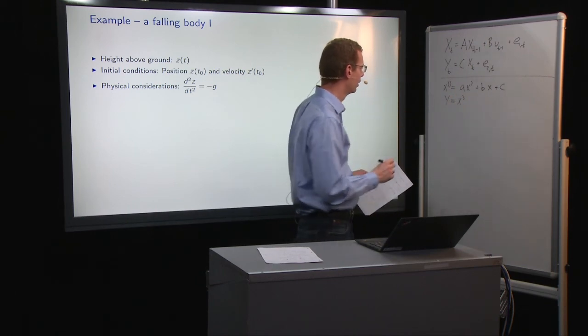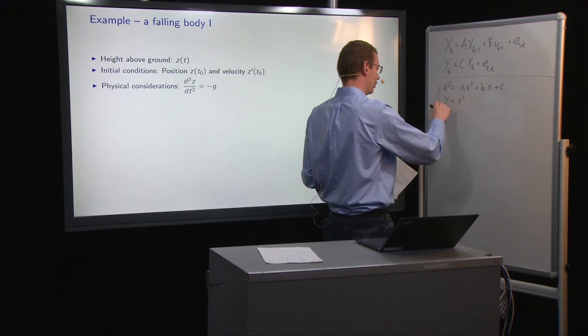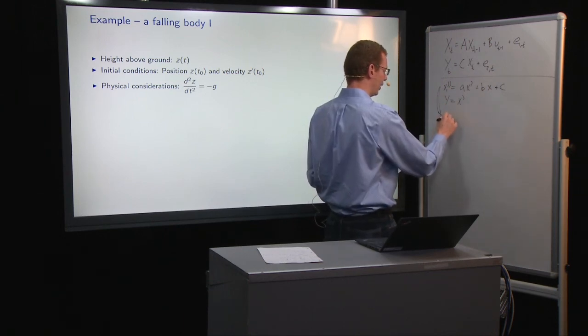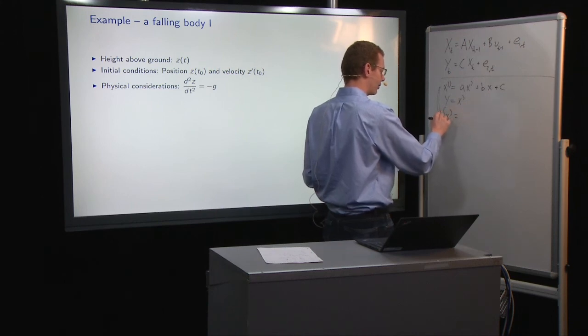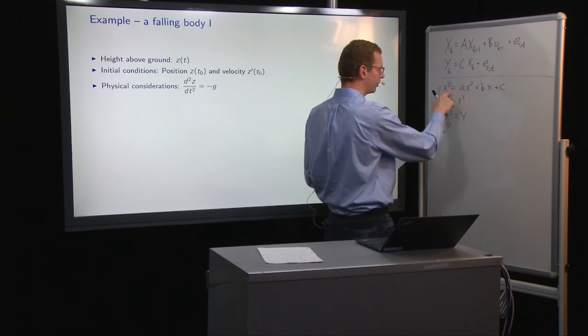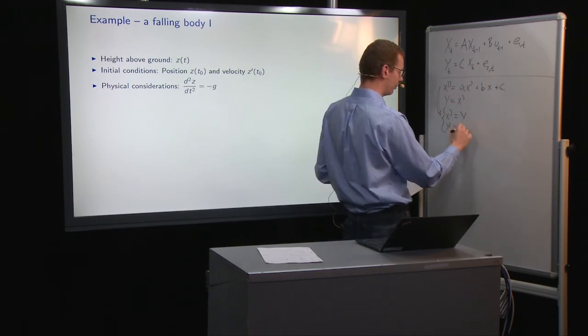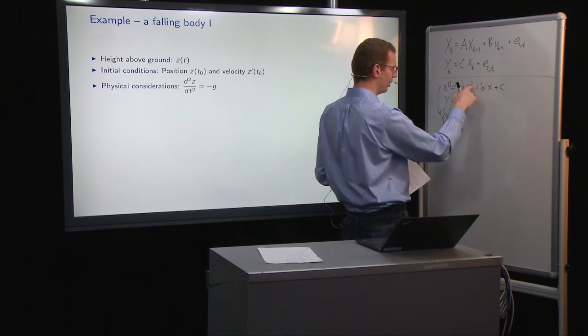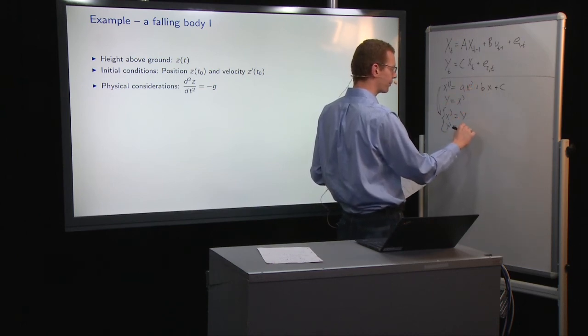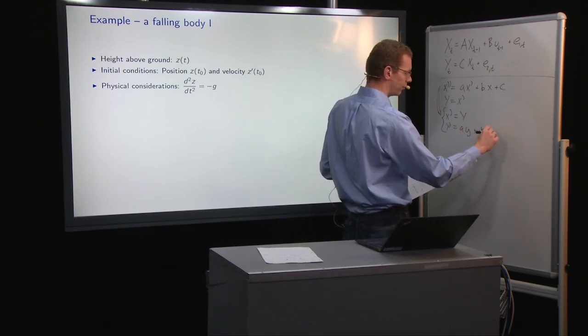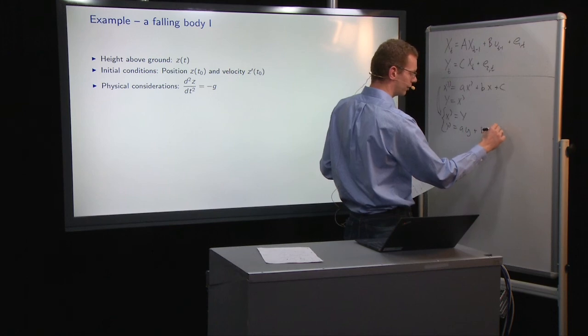So this is a generic second-order differential equation with constant coefficients. Then we will introduce y to be x prime, the first-order derivative of x. And if we use that, then we can rewrite this as a coupled system where we have x prime equals to y, and y prime is exactly what is written over here. And that means a times x prime, but x prime is y, plus bx plus c as a constant.